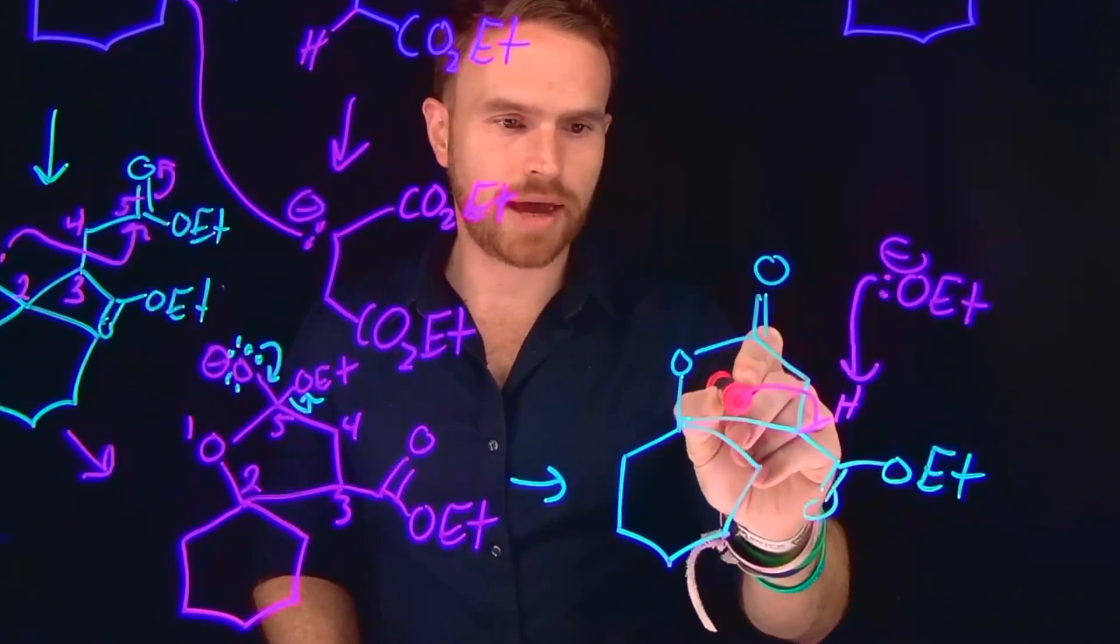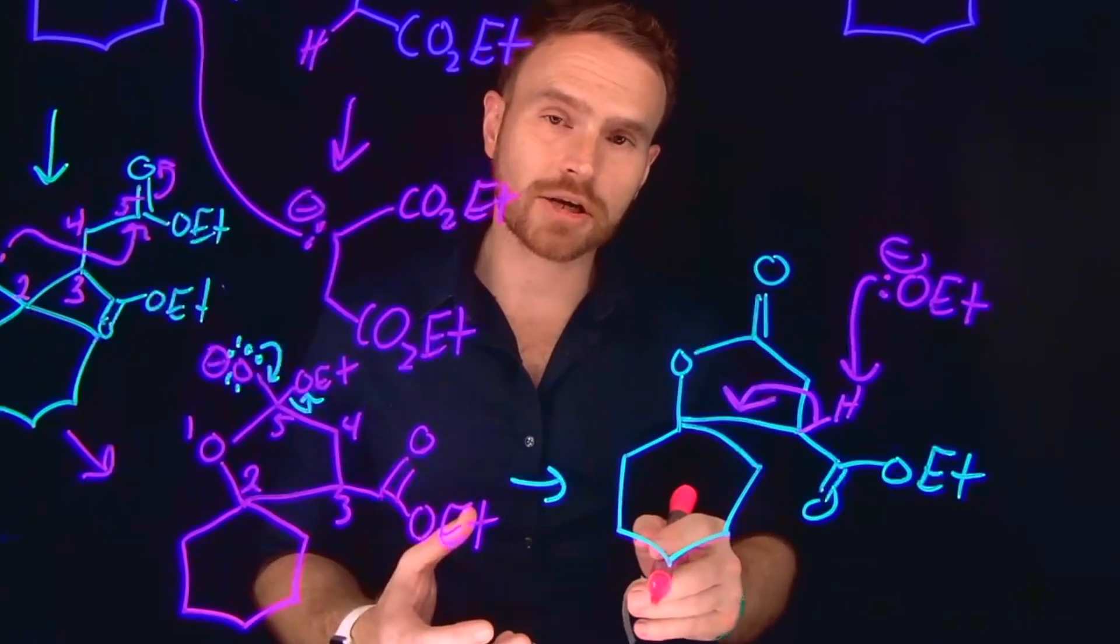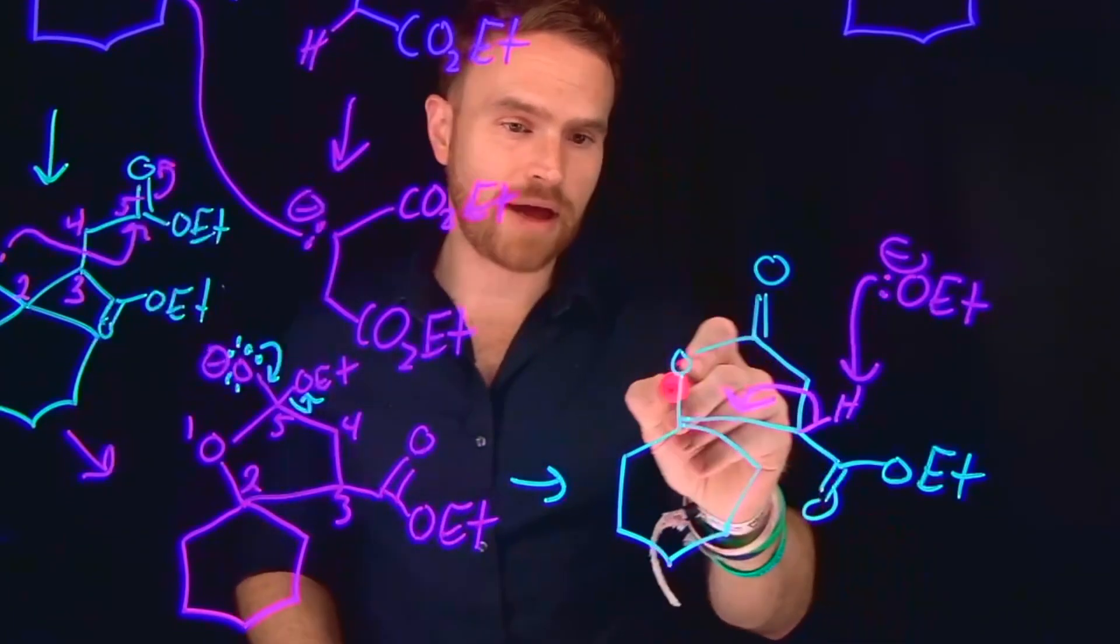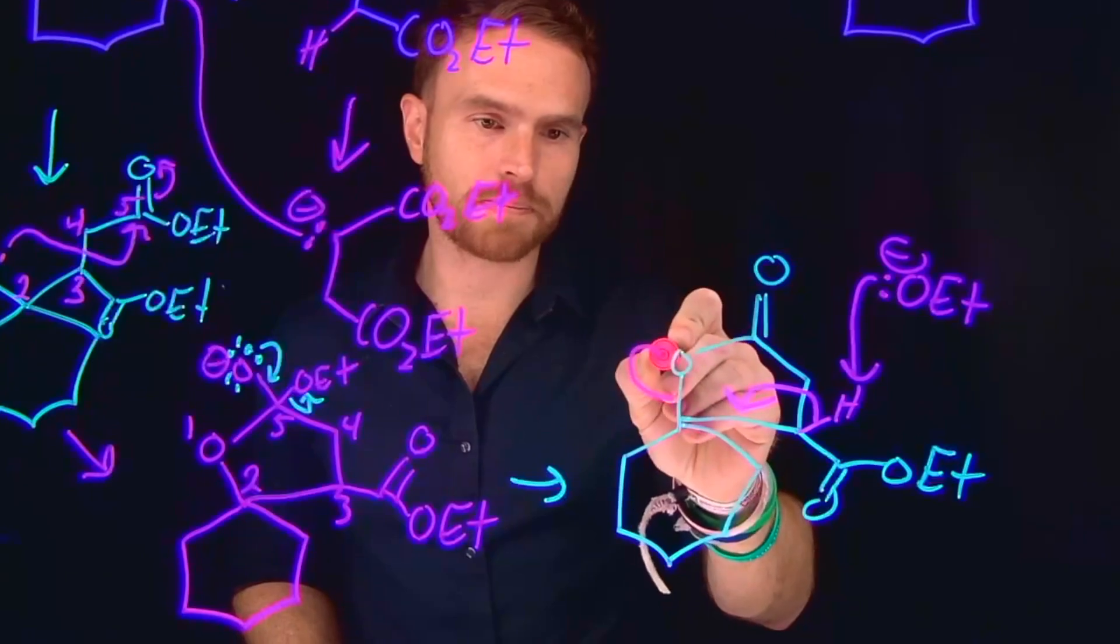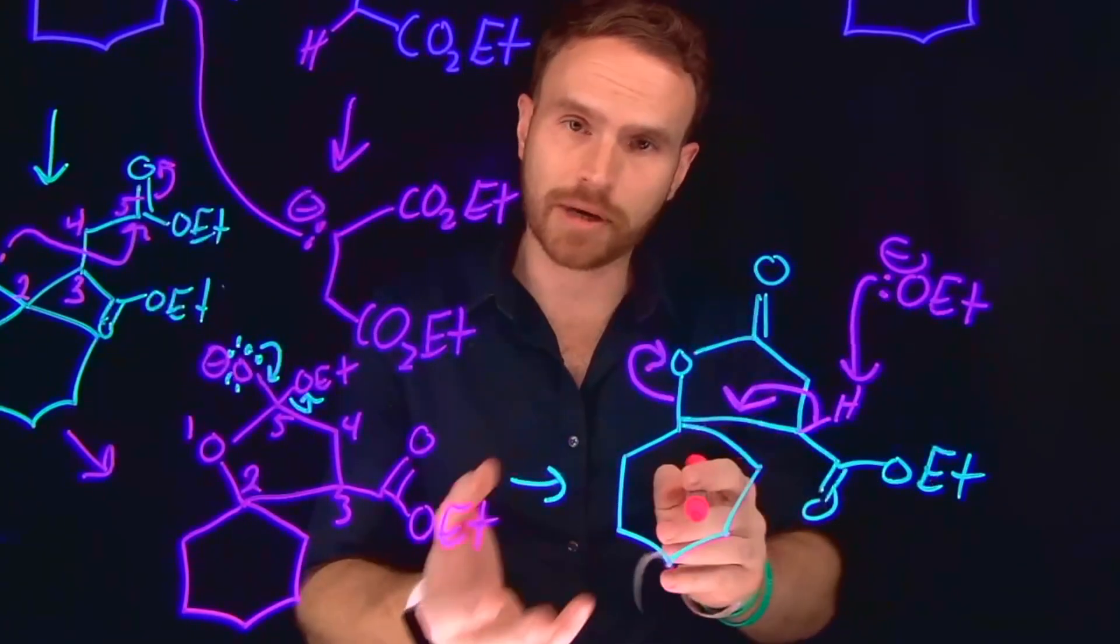These electrons can come down and form a new carbon-carbon double bond at this position, which is actually going to serve to open our ring. In fact, this is going to make this carbon-to-oxygen bond break, giving us a negatively charged species there, and again keeping our charge balance.